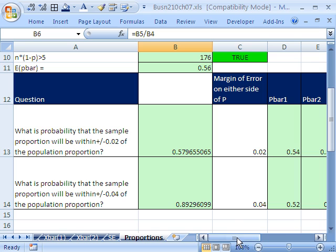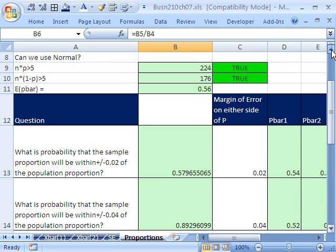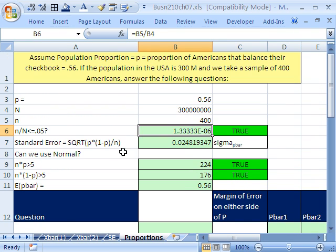And that is chapter 7, the amazing sampling distribution of the sample mean and the sample proportion. Next chapter, we'll get to do intervals, and then the following chapter we'll do hypothesis testing and bring everything we've learned in this class into use. We'll see you next chapter.